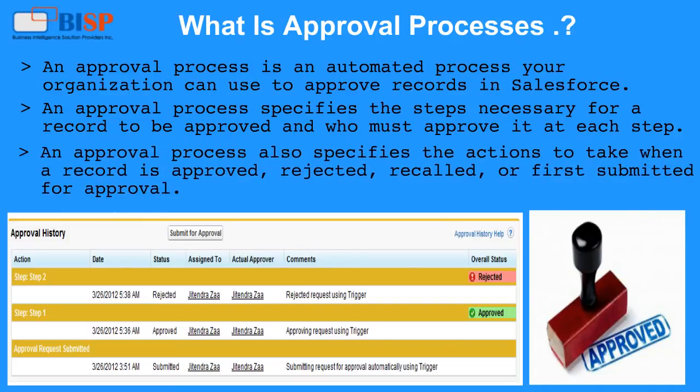An approval process also specifies the actions to take when a record is approved, rejected, recalled, or first submitted for approval.